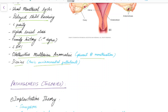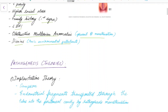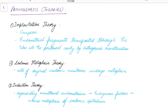Now let us see about the pathogenesis of endometriosis. There are various theories. The first is the implantation theory, proposed by Sampson. According to this theory, endometrial fragments are transported through the tubes into the peritoneal cavity by retrograde menstruation, and these cause endometriosis.